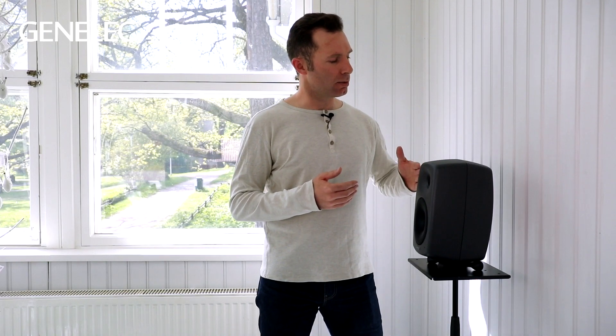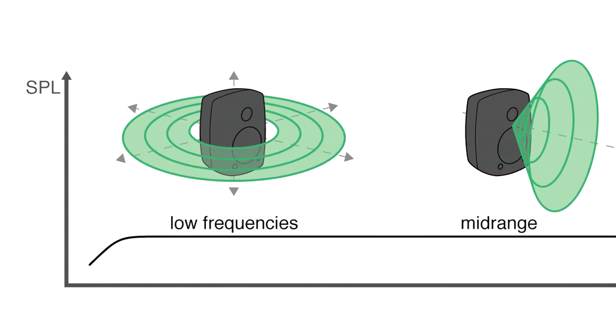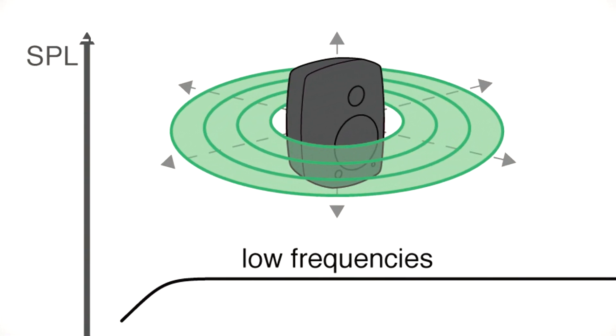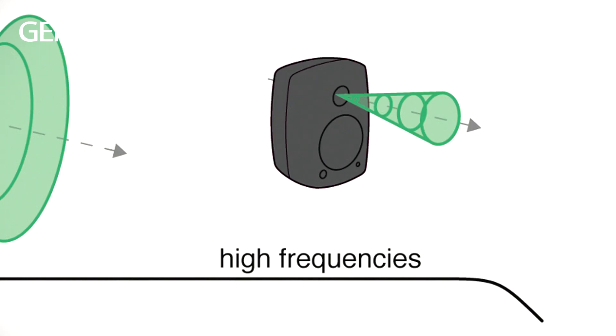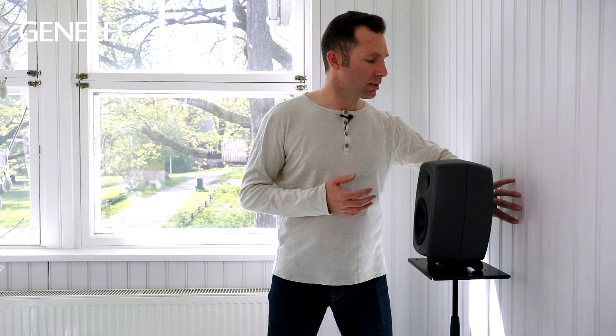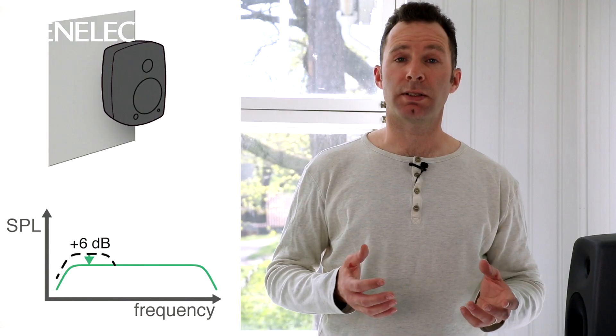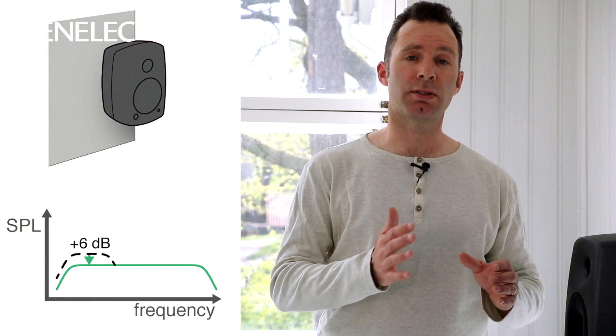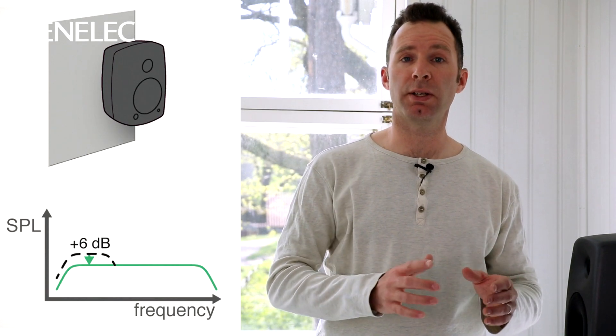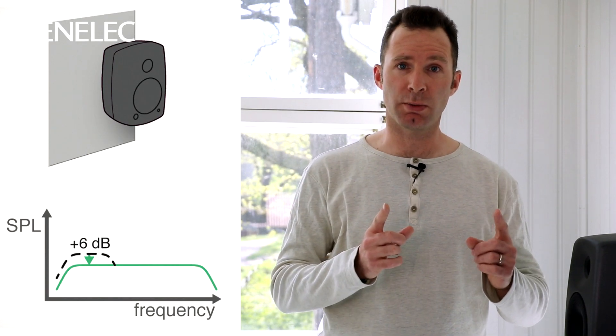The sound is equally radiated backwards and reflects from the wall, combines with the forward going wave to raise levels, whereas at higher frequencies there's less radiated backwards and in any case it's more readily absorbed by the wall. Theoretically you'll see an increase of 6 dB from about 300 hertz and downwards, depending on the diameter of your woofer.